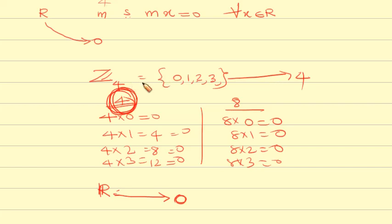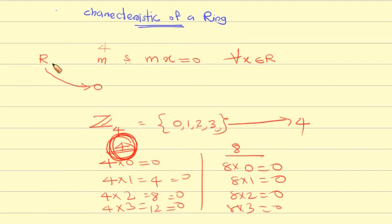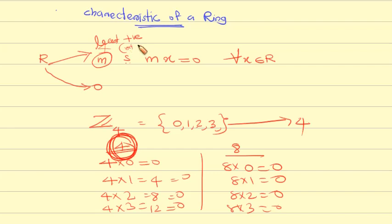To clarify: if the definition gives 0, meaning no least positive integer m exists such that m times x equals 0 for all x in R, then the characteristic is defined to be 0. That is, if no least positive integer satisfies the condition, the characteristic is 0.